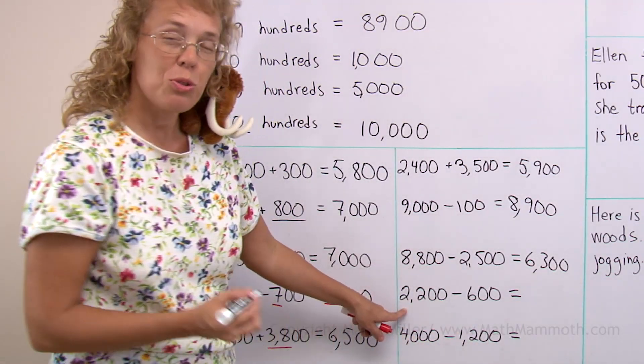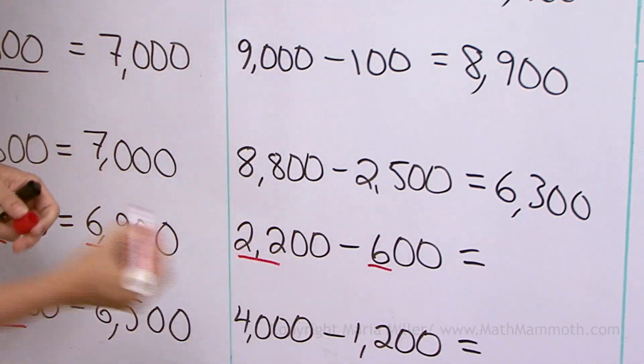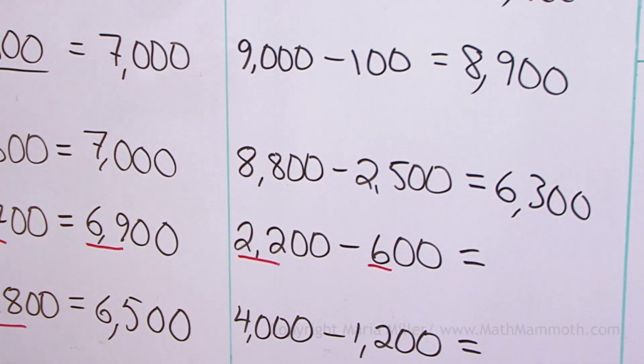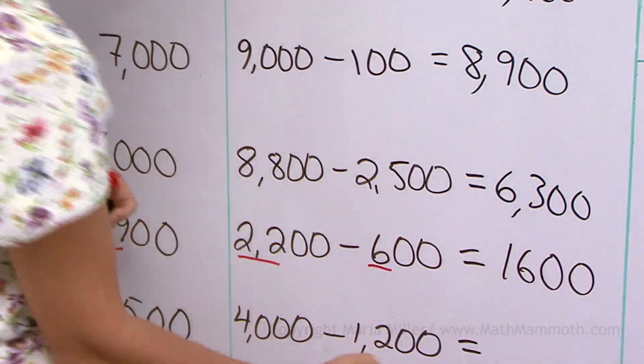How about this one? 2200 minus 600. Again, one way to do it is to think of 22 minus 6. Which is 16, right? So here we get 1600.